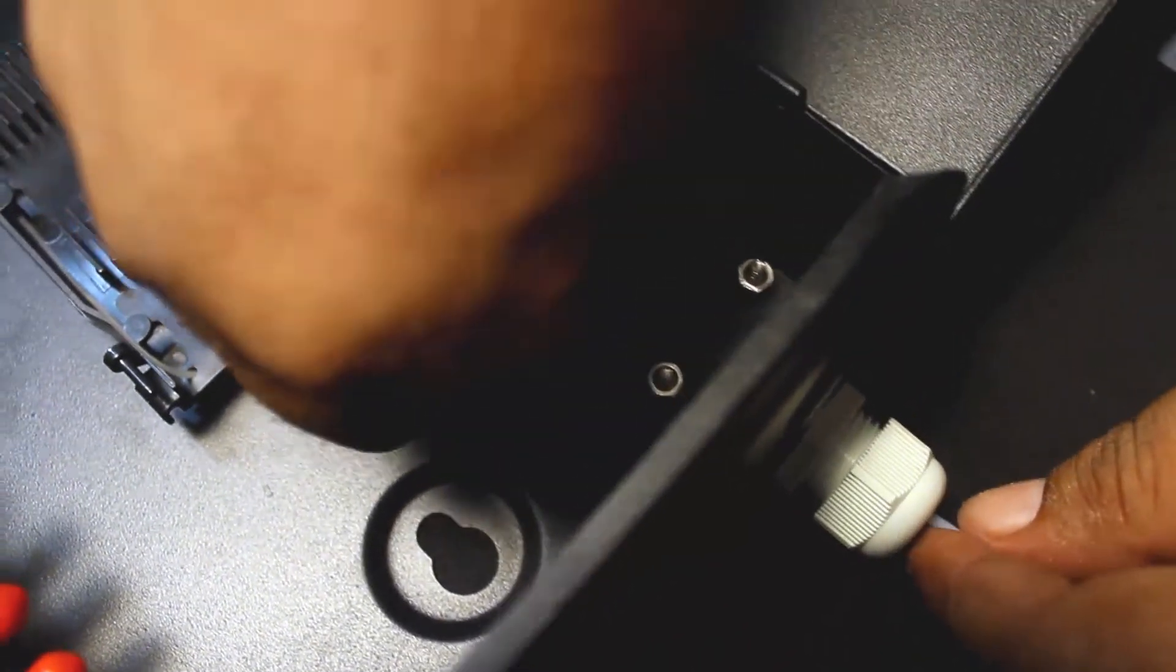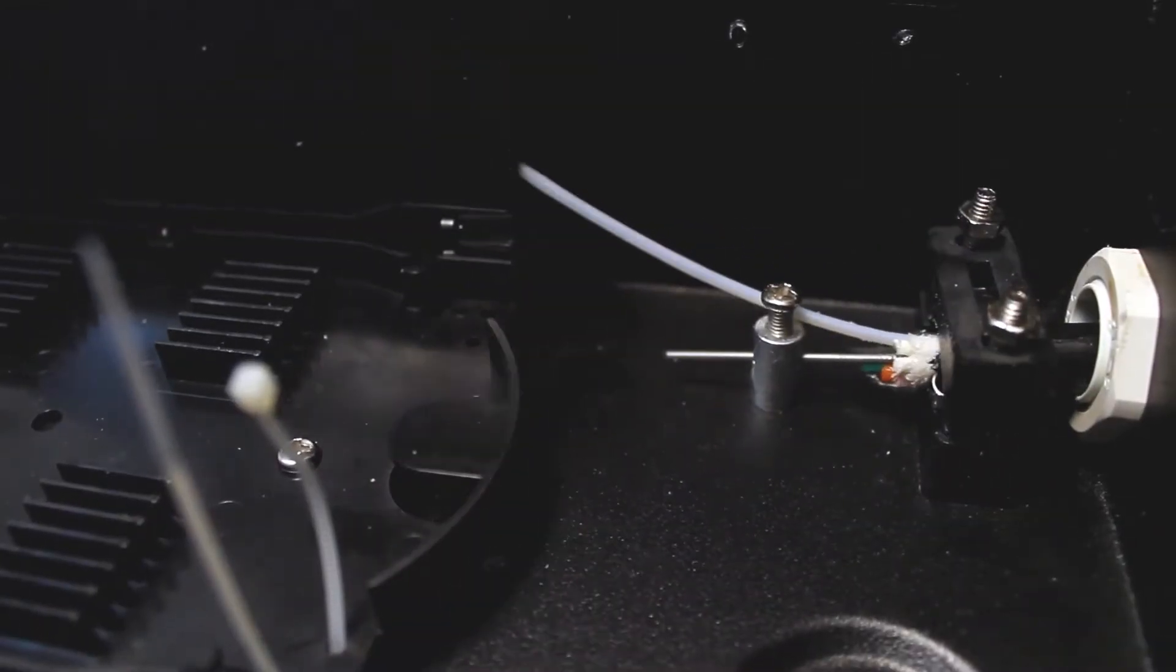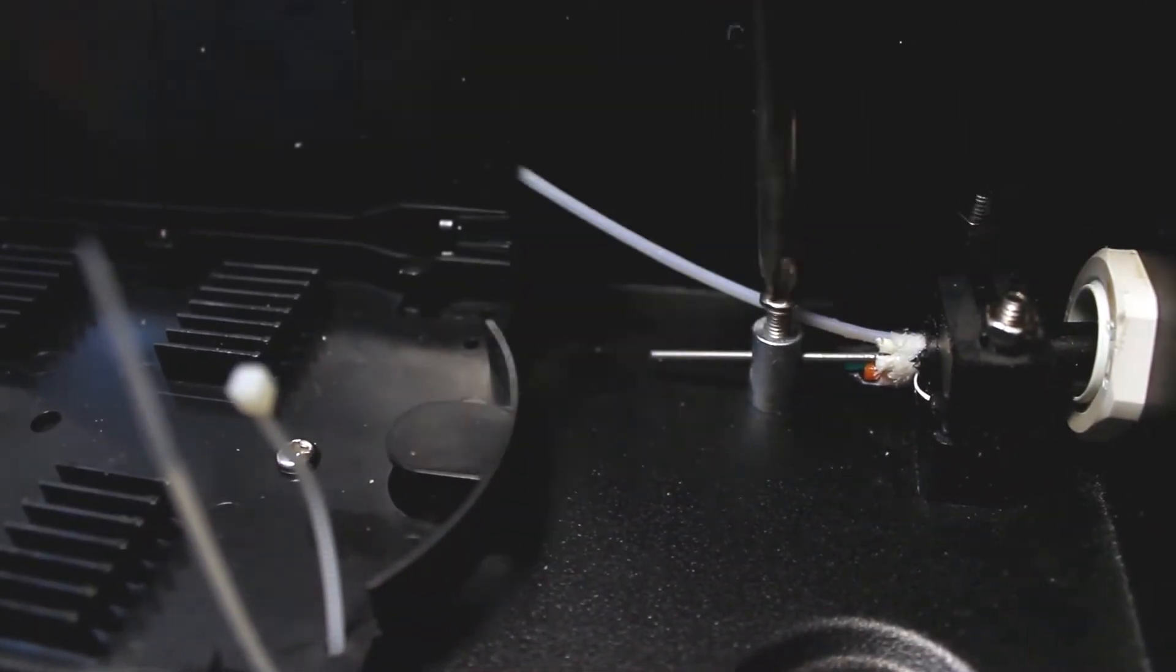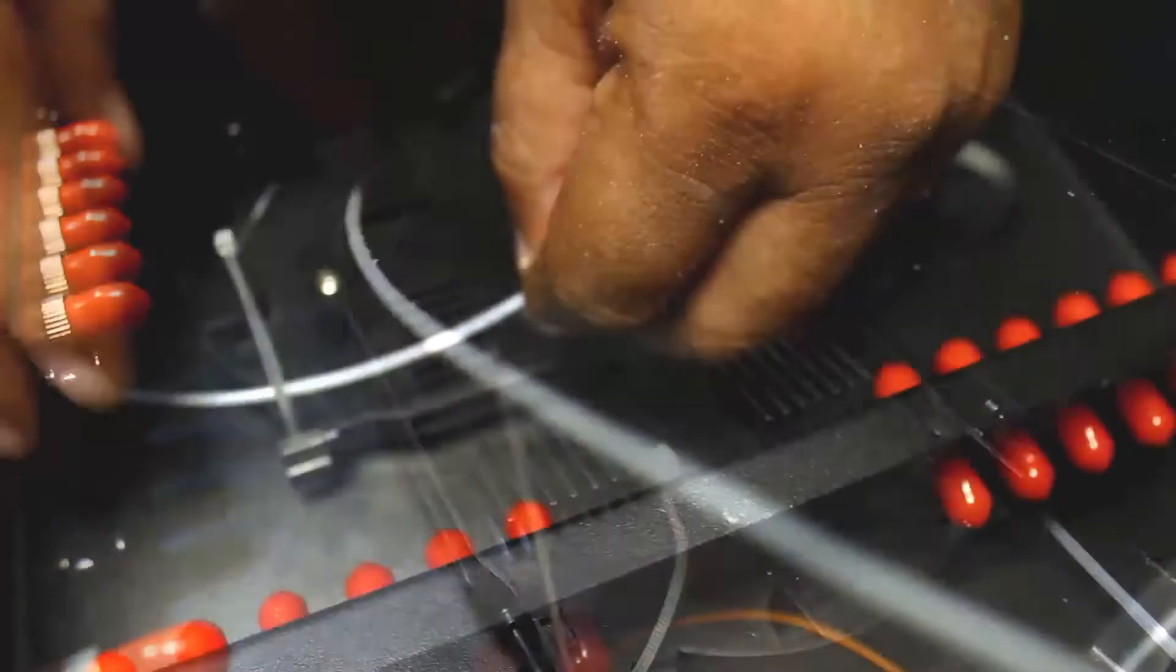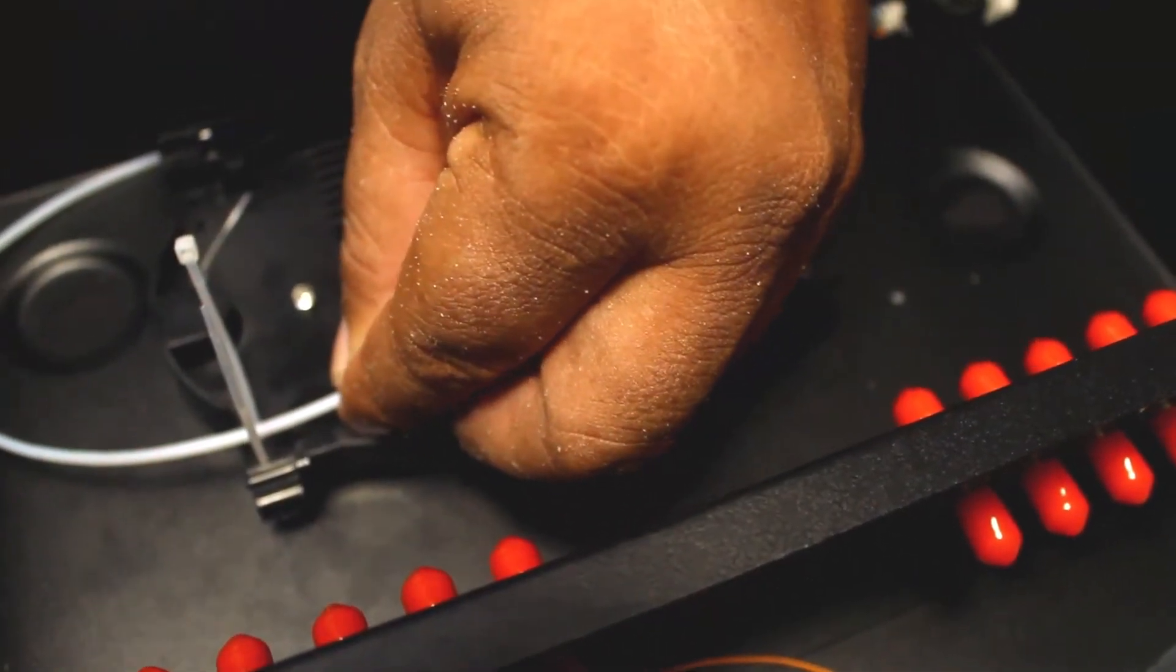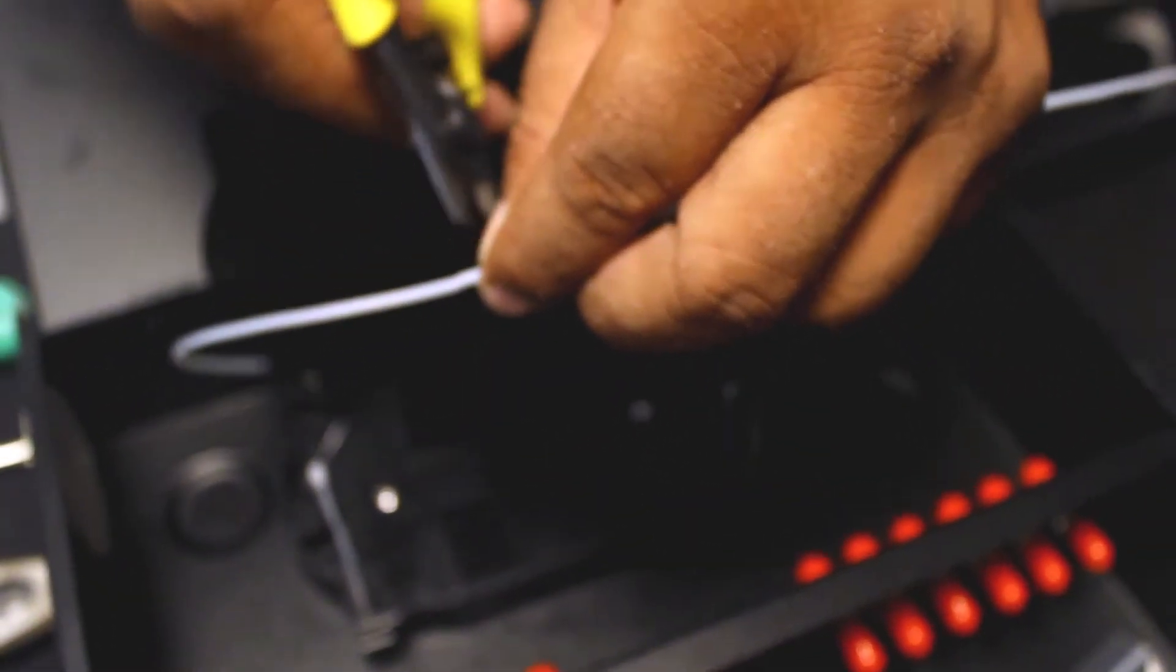Introduce the buffer into the termination box right to the splice tray and hold the strength member in place with a screwdriver. Mark the length you need to terminate the fiber from and remove the buffer jacket from that point with a stripper.